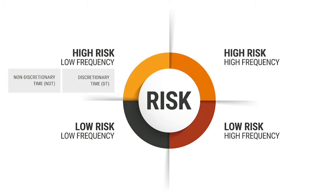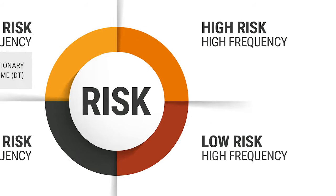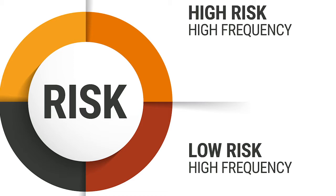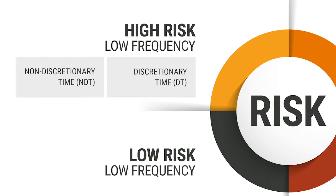My point in the last tip was: rarely do we make mistakes on high-frequency events — the right two boxes. Things we do a lot, we tend to do very well. When you start studying tragedies, too often they occur in the left two boxes — low-frequency events, things we do rarely.